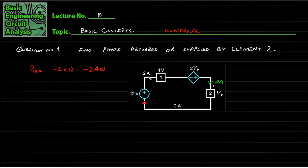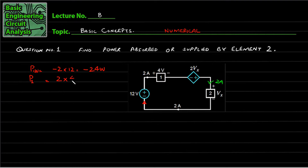Similarly, the 2A current is entering in the 4-volt component from the positive side. I will mark this as component number one, because it is written as component number one. So 2A current into 4 volts — that will be positive 8 watts.